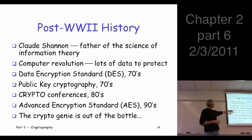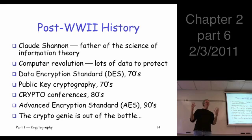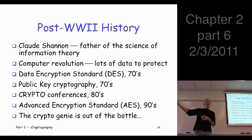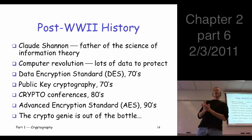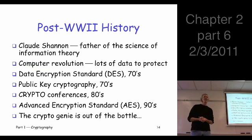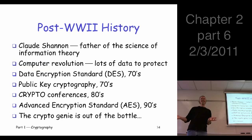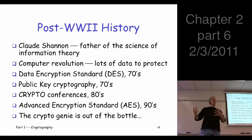The real issue is that there was not a clear need until you started getting a lot of information computerized and gathered in one place. Now people started to worry — there's a big database with all these medical records, and if that gets out, we've exposed a lot of people's personal and private information. Before computers, your medical records were in a filing cabinet in some doctor's office. If somebody broke in, they might get 10 or 20 records. Now, if somebody breaks into the computer, they're going to get thousands, perhaps millions of records.